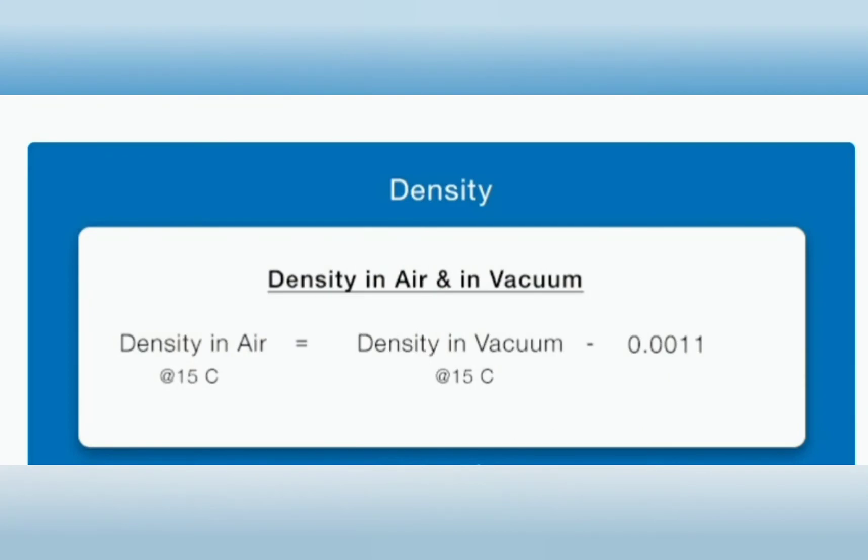So first we need to find the VCF from ASTM table 54 for temperature 34°C. Go to ASTM table 54 and look under density at 15°C of 816.0 and temperature 34.0°C.